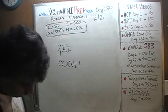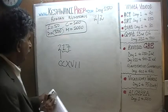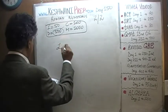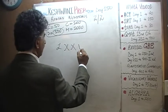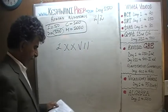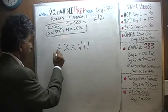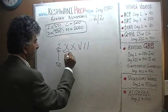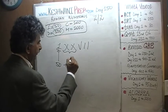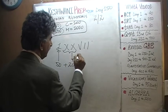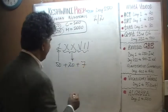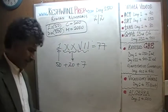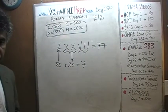Let's do one more — tell me what this number is: LXXVI. L stands for 50. XX is 20. And then we have VII which is 7. So 50 plus 20 plus 7 — this is how you would write 77.